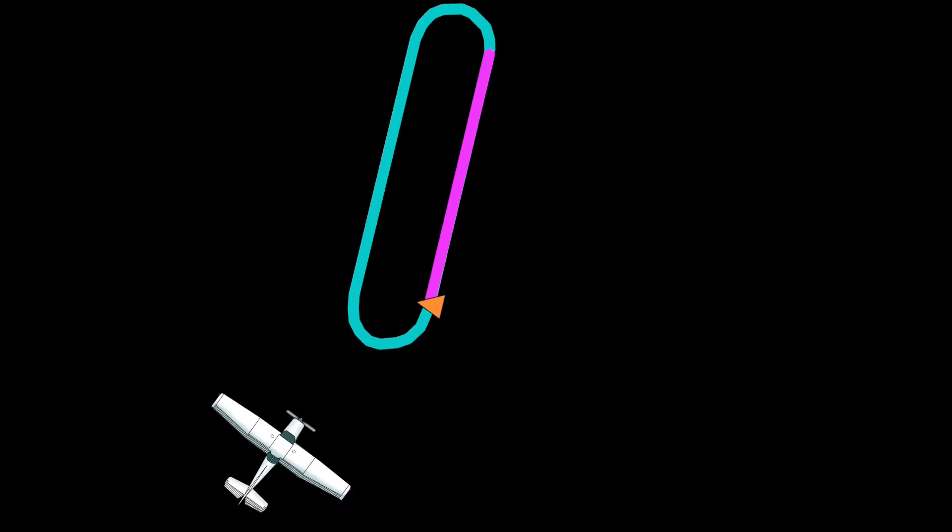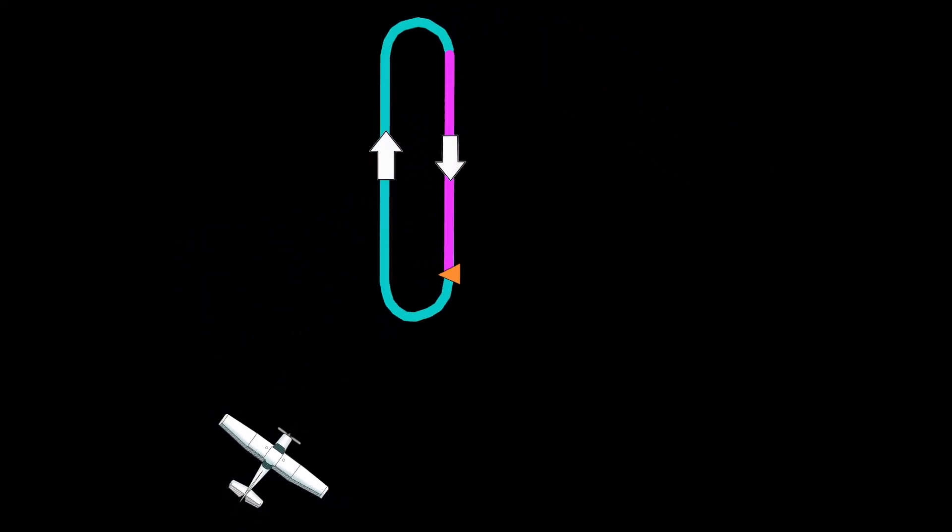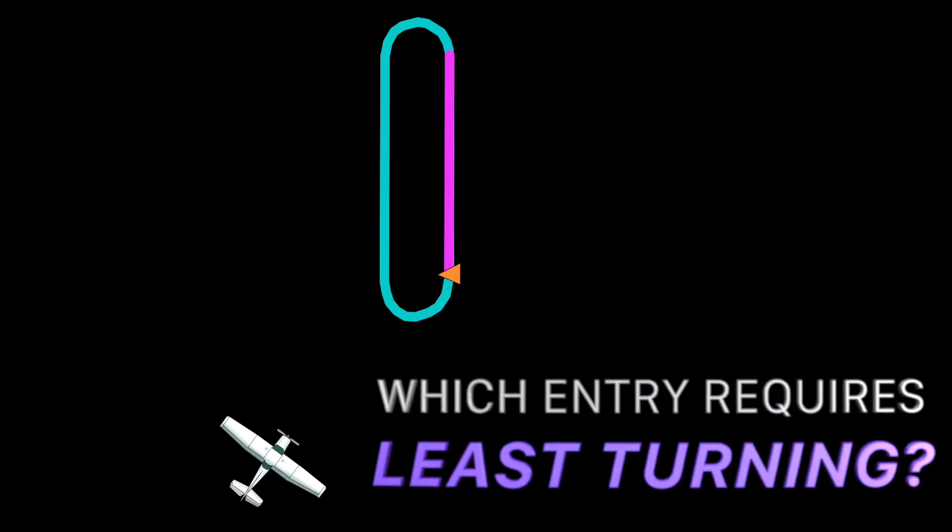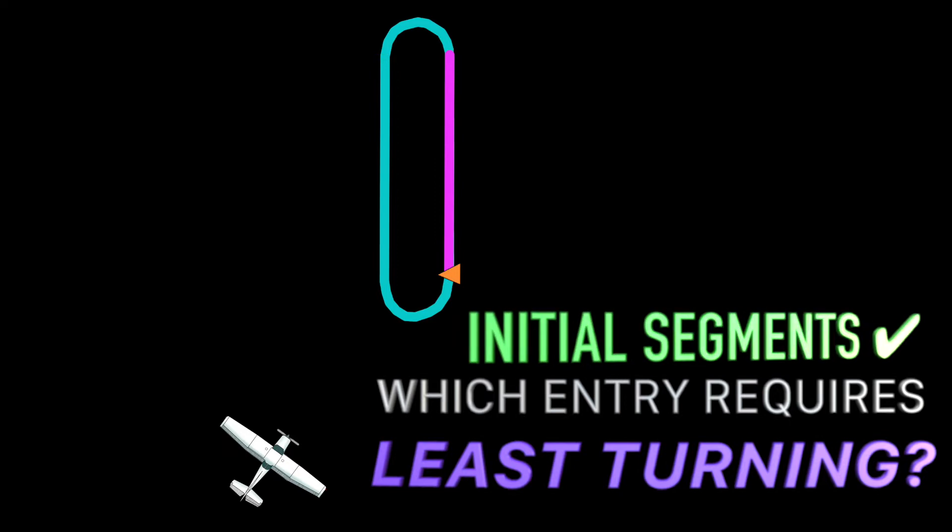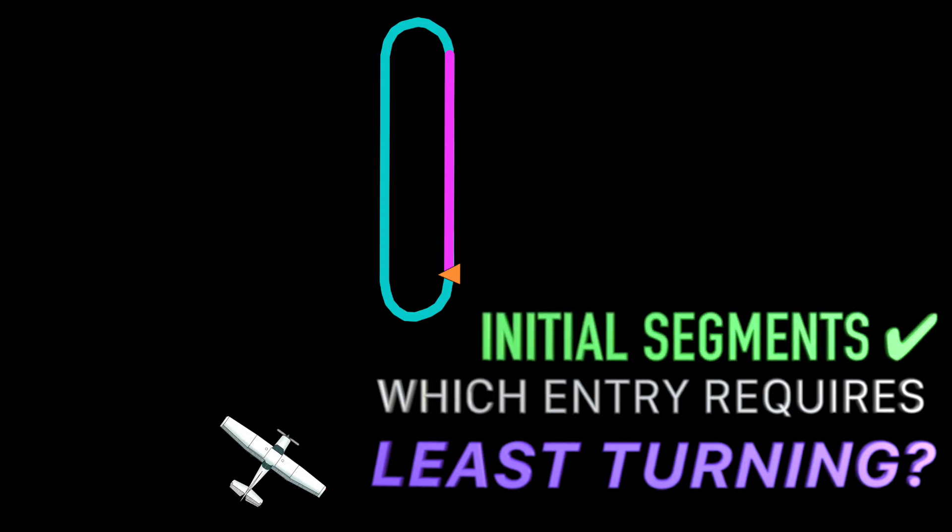We have the aircraft here and it's heading towards a holding pattern cycling in this direction. And the big question, for this aircraft to enter the hold from its current position, which of the three entry type options would require the aircraft the least amount of turning upon entry? We will look at the initial segments to answer this question.